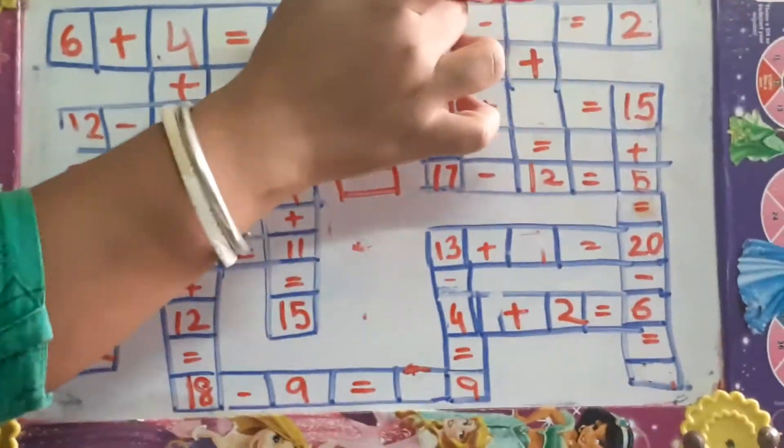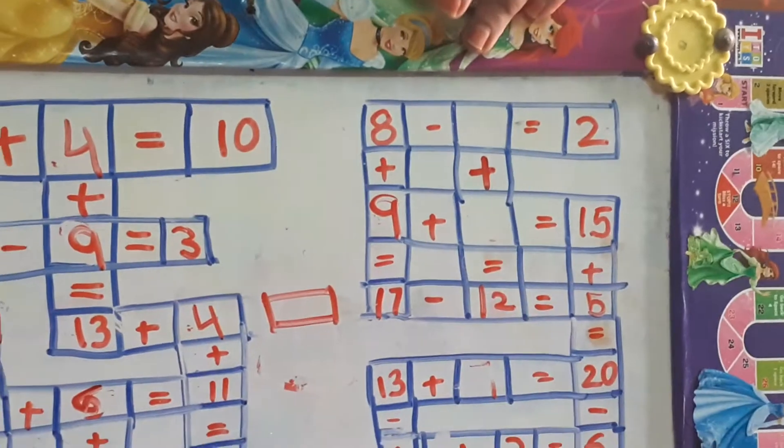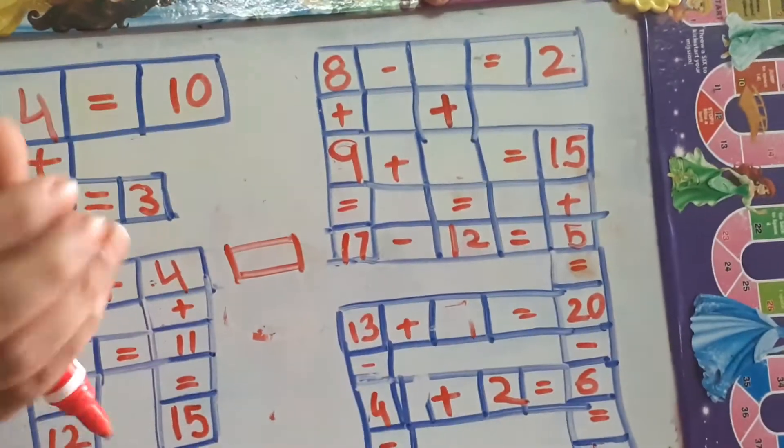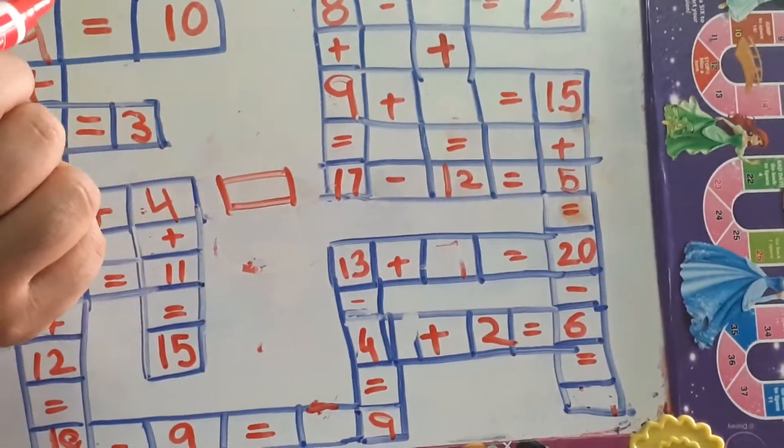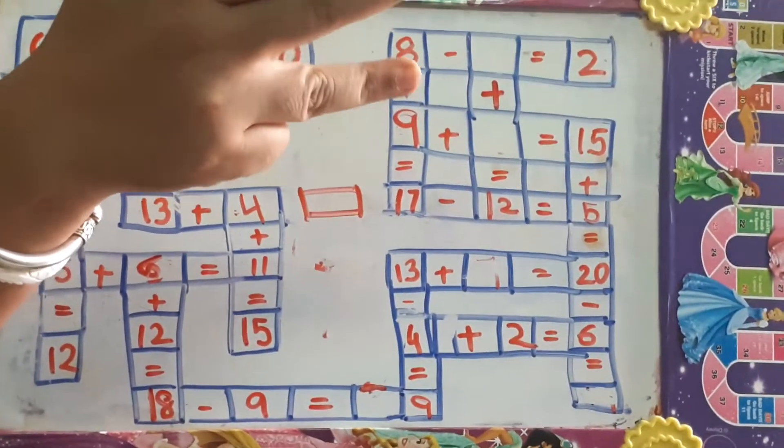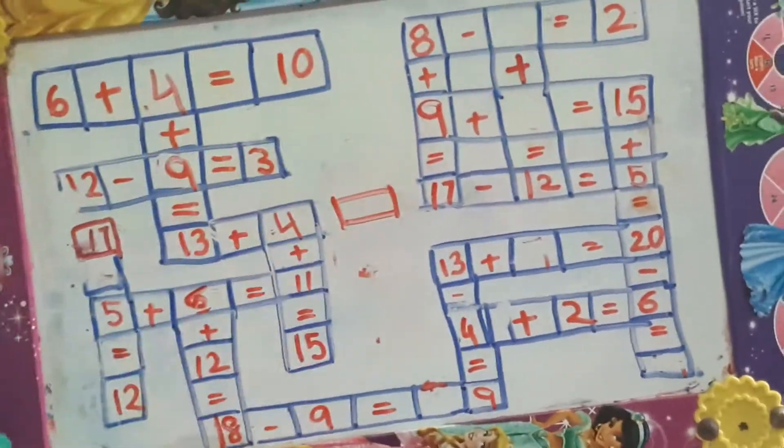So now here, 8 minus dash is equal to 2. Count backward, because this is subtraction. 8 minus means count backward. You have to come till 2. 7, 6, 5, 4, 3, 2. How many fingers? 6.